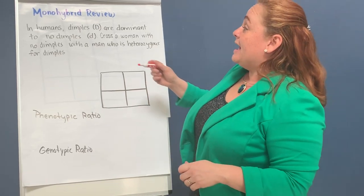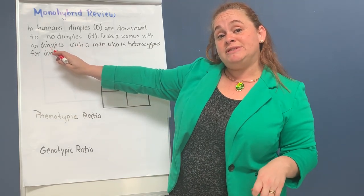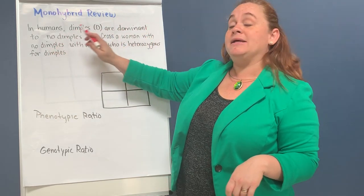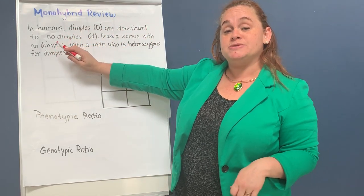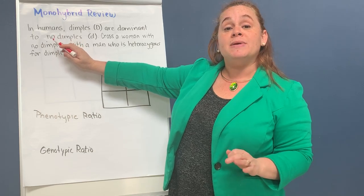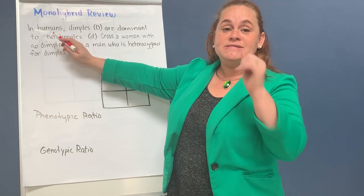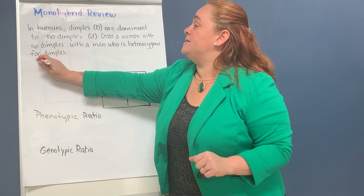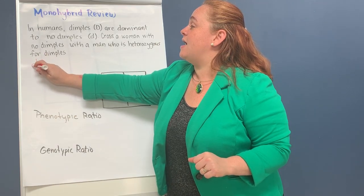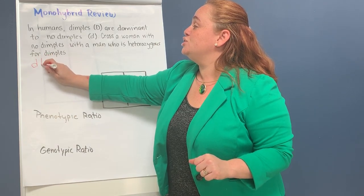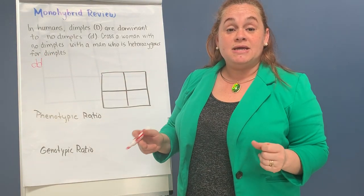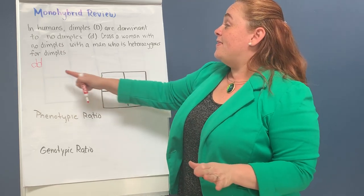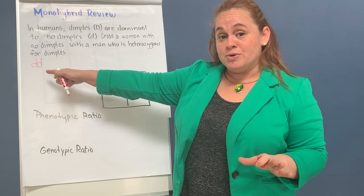If the woman has no dimples, and we know that dimples are dominant to no dimples, that means that the woman is recessive. In recessive, that means she has to have two lowercase letters, because she has no dimples. That is the woman's genotype.